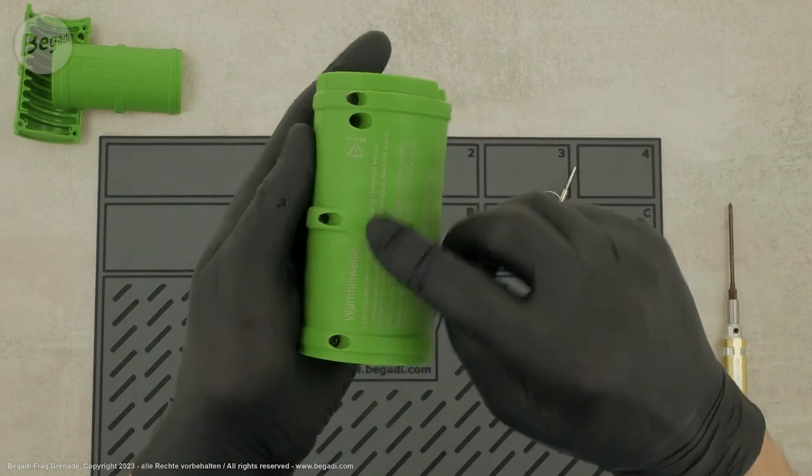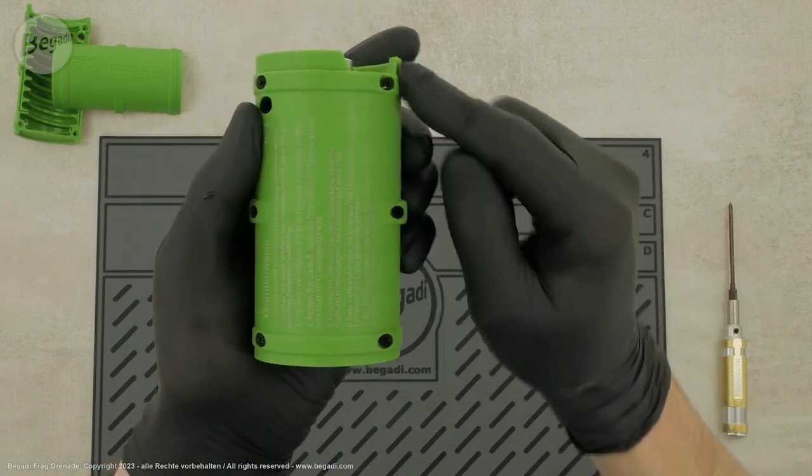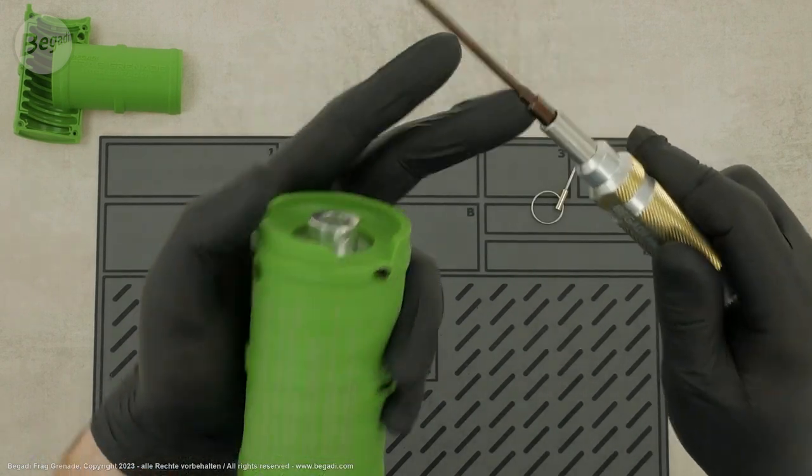Now, loosen the six screws that connect the shell segments. You will need a small crosshead screwdriver for this.